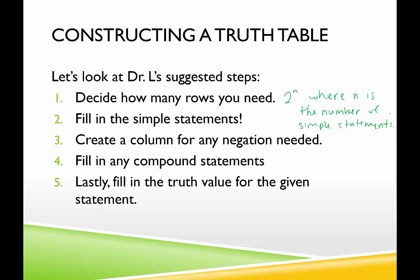Next, we fill in the simple statements. Then we create any columns needed for negations — only include negations that appear in the example. Then fill out any compound statements: conjunctions, disjunctions, whatever the case may be. Finally, fill in the truth value for the complete given statement. The final product is just a table full of Ts and Fs.